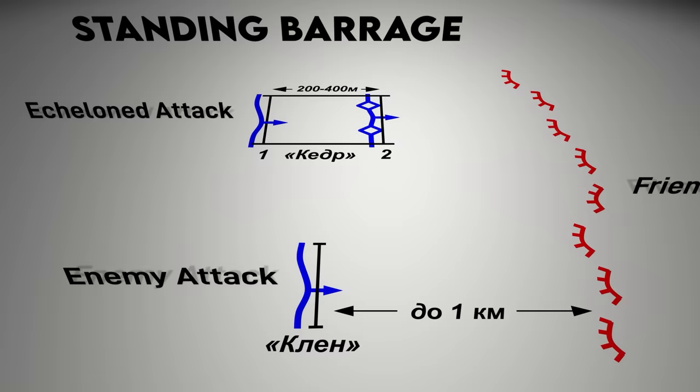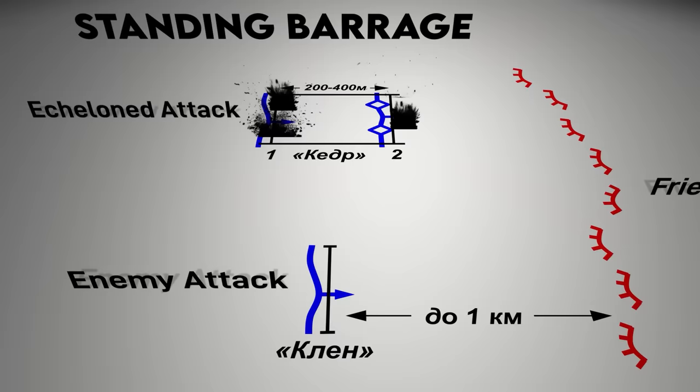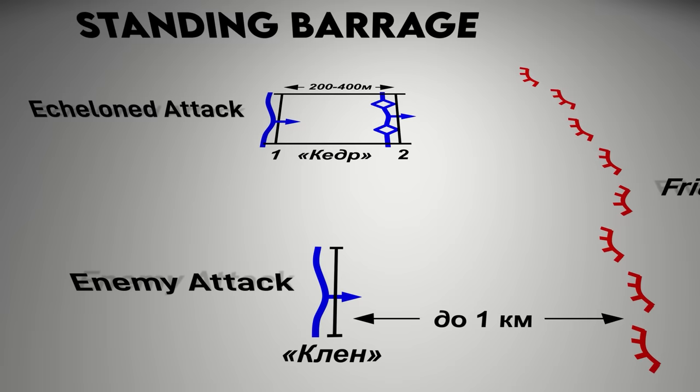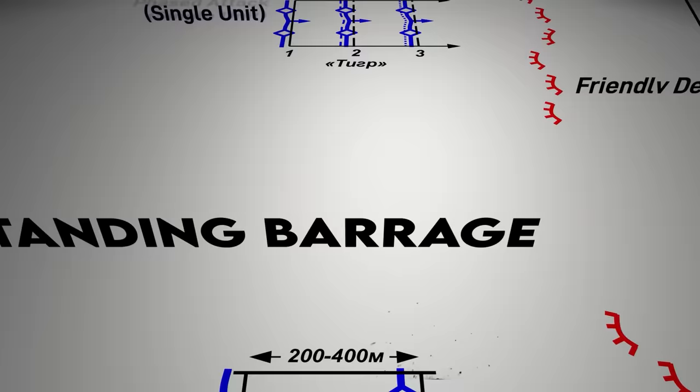Multiple standing barrages can be stacked on top of each other, fired at the same time, to hit the attacking enemy along more of their depth. As an example, an artillery battalion firing a deep standing barrage along a 300-meter front might assign each of its batteries to one barrage line.